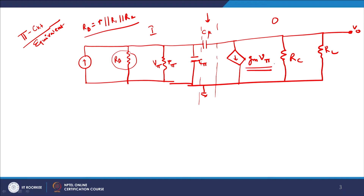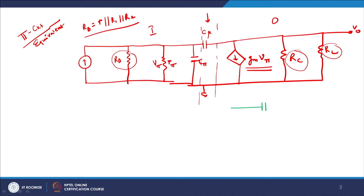Gm times V_Pi gives the current flowing through the BJT. R_C is the collector resistance and R_L is the load resistance. Now we would like to model C_Mu — this is where the Miller capacitance portion comes in. We model C_Mu as a two-port network to see how it gives us a result. We have C_Mu with current I1 and I2 both going into the black box, V_Pi as input voltage, and V_0 as the output voltage.